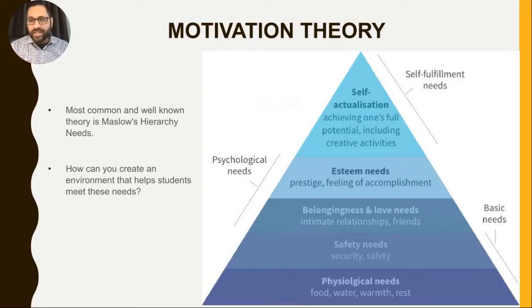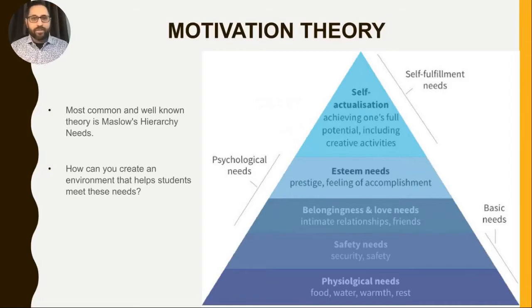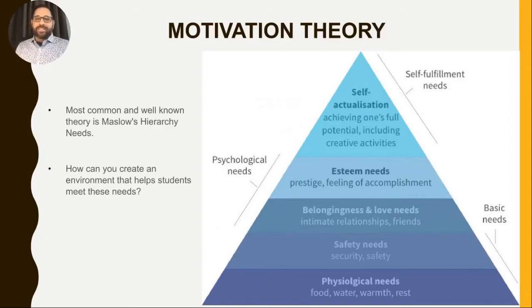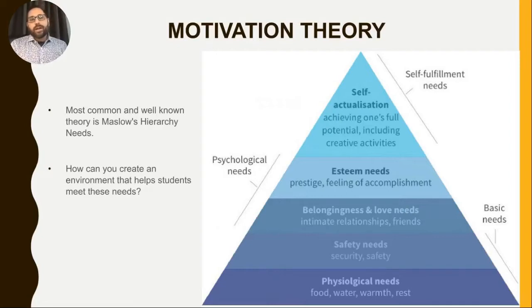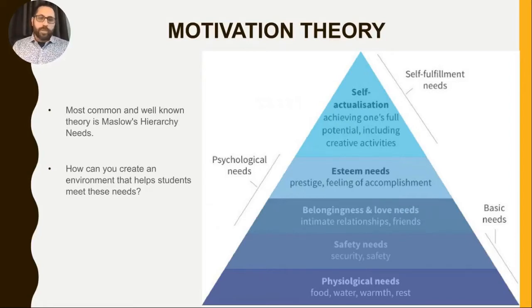So most of us said yes, and one person said no in that poll — good for you. If you have any tips on how to not avoid anything throughout the day, make sure you put it in the chat box. You may be familiar with this — this is the Hierarchy of Needs by Maslow. It's pretty common; most people have heard of it. I love how it links to a lot of things we're talking about today about the different parts of the brain.